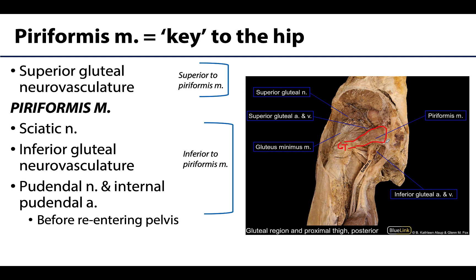Any of the neurovasculature that you can see coming out superior to the piriformis is the superior gluteal neurovasculature. Any of this right here are branches of that superior gluteal neurovasculature. Think about what the superior gluteal neurovasculature supplies — it innervates the gluteus medius and minimus, so this is going to be important in terms of those muscles.